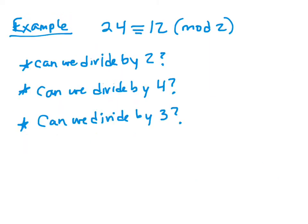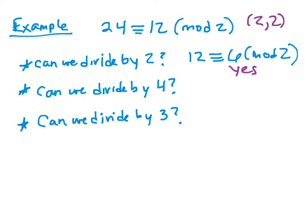For example, 24 is congruent to 12 mod 2. Can we divide each side by 2? That would give 12 congruent to 6 mod 2, and yes, it works. But this isn't guaranteed by our theorem because the GCD of C=2 and M=2 is 2, not 1. Can we divide by 4? That gives 6 congruent to 3 mod 2, which is not a true statement. The GCD of 4 and 2 is not 1, so there was no guarantee.